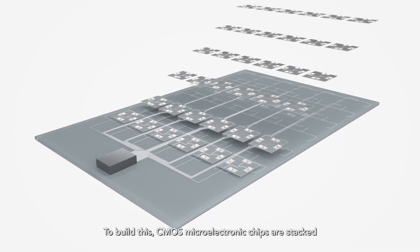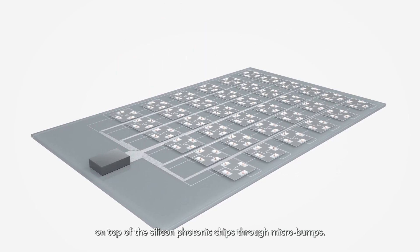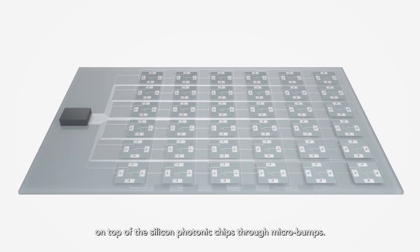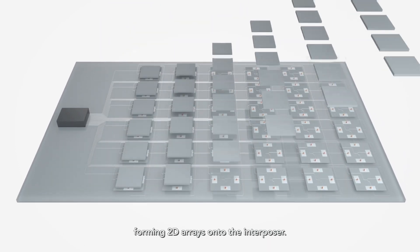CMOS microelectronic chips are stacked on top of the silicon photonic chips through micro-bumps, forming 2D arrays onto the interposer.